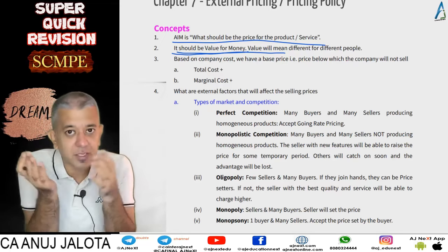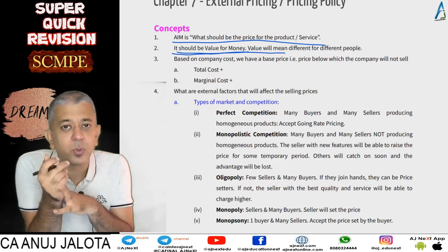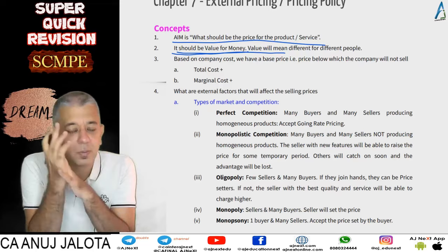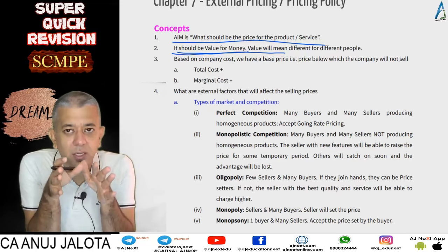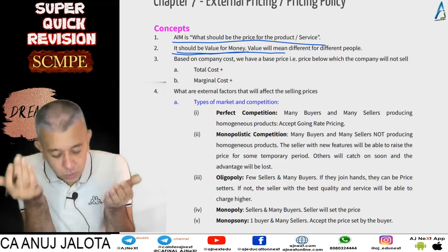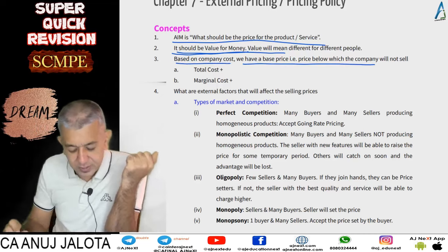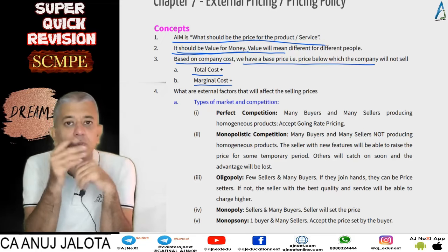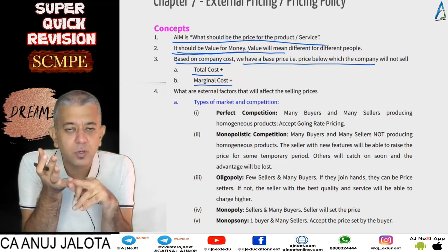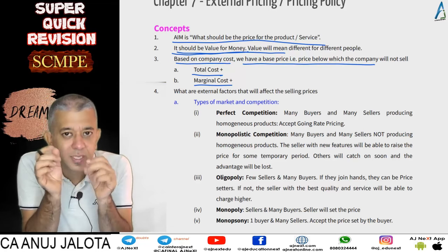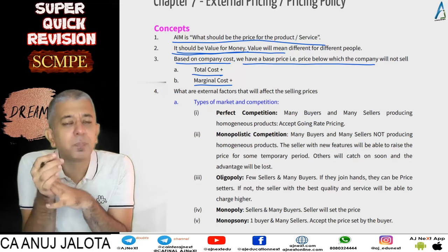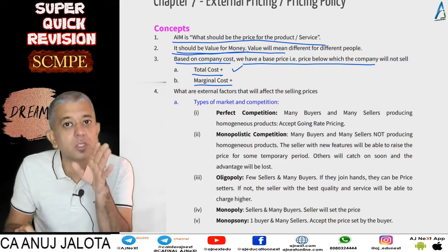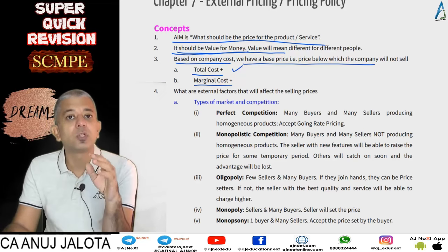When you calculate the selling price to present to the customer, the first thing that comes to mind is cost. We don't want to go below our cost. Now, costs are of two types, giving us a base price — a floor below which we won't go. Total cost plus means I charge variable cost plus fixed cost to the customer, plus profit. Marginal cost plus means I charge only variable cost plus a contribution. So total cost plus equals total cost plus profit; marginal cost plus equals marginal cost plus contribution.